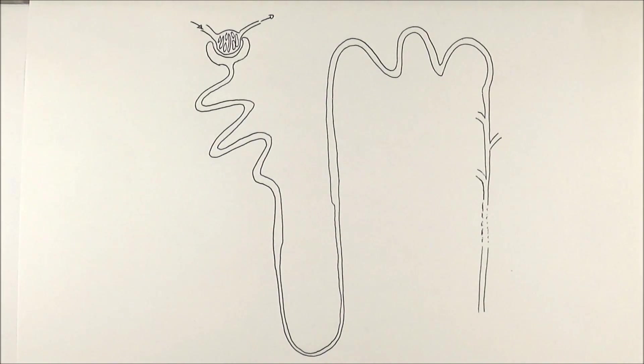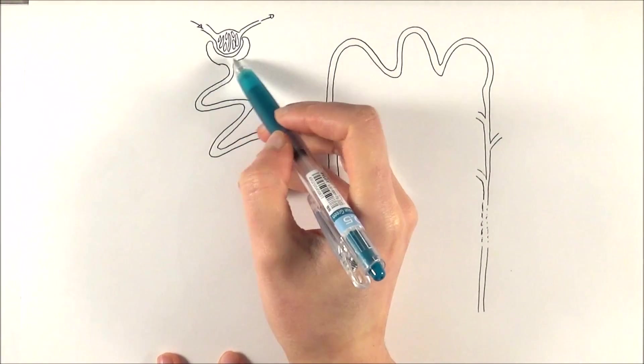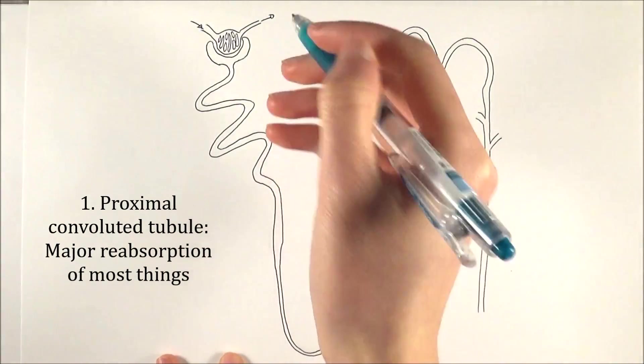So here we'll be looking at the details of it, thinking about where things get reabsorbed and by what process they do so. First of all, after the substances enter the Bowman's capsule, it travels through the proximal convoluted tubule.